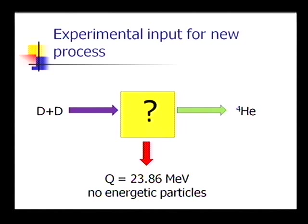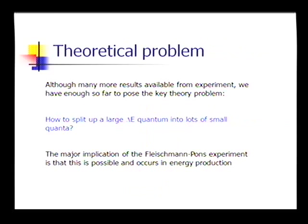This sets up the theoretical problem. And the theoretical problem, if this is going to happen, you've got 24-MeV reaction energy. And basically that reaction energy has to be split up into a large number of small quanta. The question is, how can you do that as a theoretical problem?